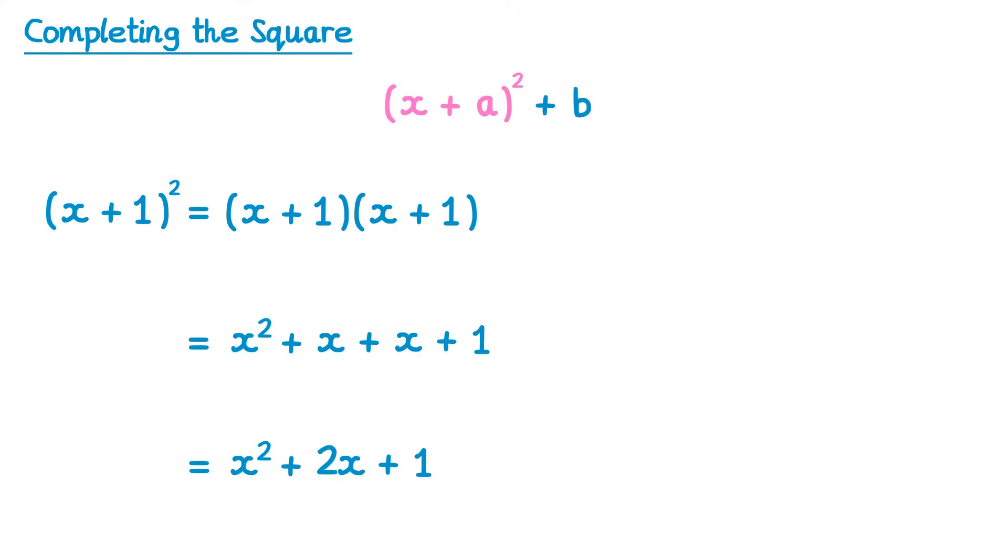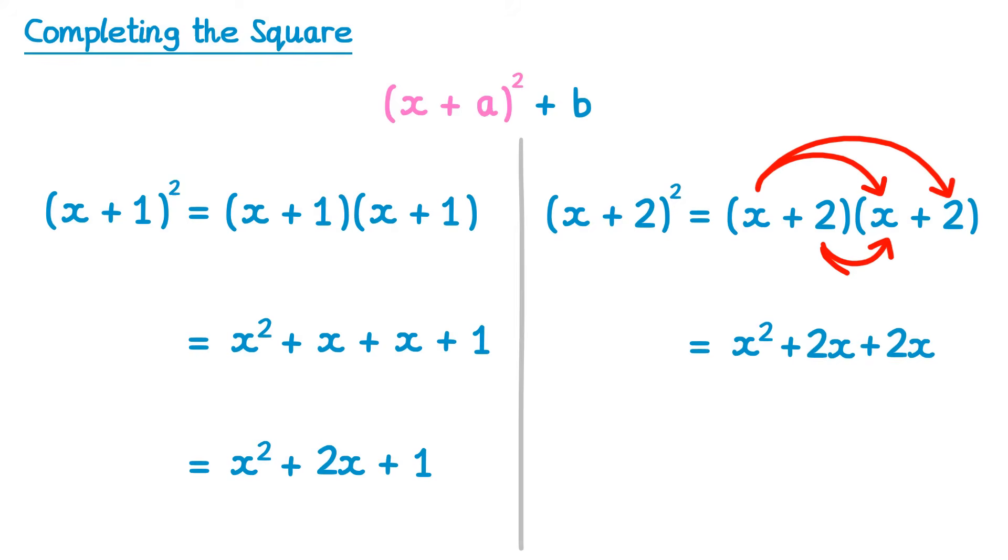Now what about if instead of x plus 1 all squared it was x plus 2 all squared? Well again we'd write x plus 2 times by itself and use FOIL. x times x, x squared, x times 2, plus 2x, 2 times x, plus 2x, and 2 times 2, plus 4. Simplify the middle two terms and you get x squared plus 4x plus 4.